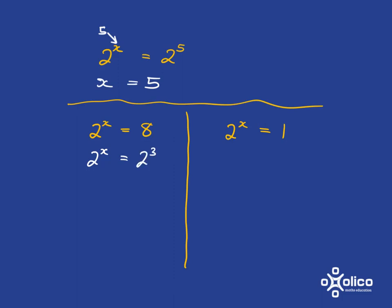right? And so now what do we have to put in place of x so that this and this are exactly the same? Well, obviously we have to have x is equal to 3.